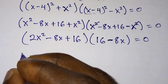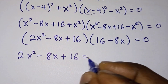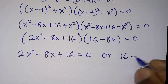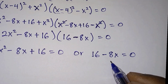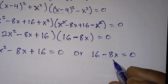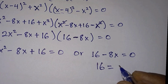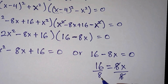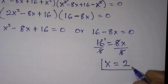So from here we can say that 2x squared minus 8x equals 0, and the second equation is 16 minus 8x equals 0. Let's pay attention to the second equation because it looks simpler. Moving 16 to the right gives us 16 equals 8x. Dividing both sides by 8, we get x equals 2 as one of the solutions.